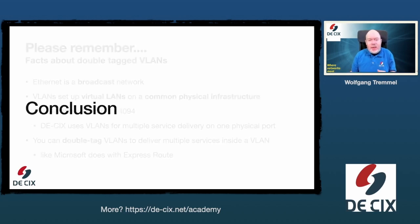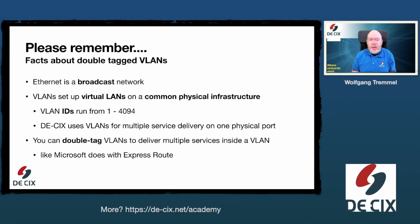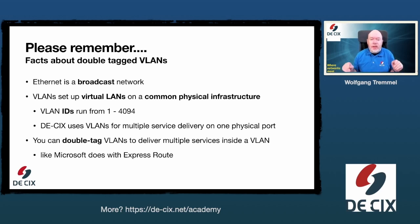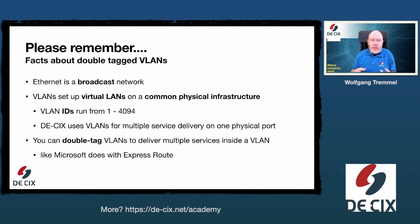In conclusion, here are some facts about double-tag VLAN. Always keep in mind that Ethernet is a broadcast network, and VLANs set up virtual LANs on a common physical infrastructure. VLAN IDs run from 1 to 4094. DE-CIX uses VLAN IDs to deliver multiple services on one physical port. You can double-tag VLANs to deliver multiple services inside a VLAN, as Microsoft does with ExpressRoute. And you can set both tags — the inner and the outer — simultaneously on any modern router.